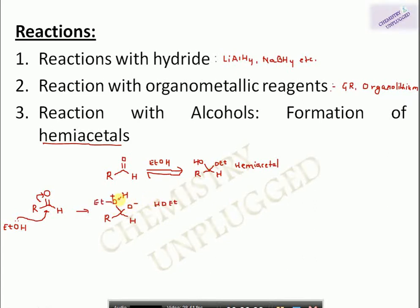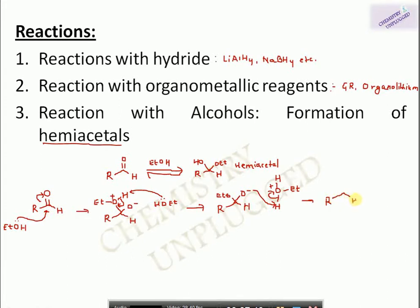In the next step, a second molecule of alcohol attacks; the hydrogen shifts to the electron-deficient oxygen. The ethanol attached has two hydrogens and a positive charge on oxygen, so this bond shifts and the negative oxygen picks up the hydrogen, giving a molecule of hemiacetal. This is the mechanism without any acid or base catalyst.